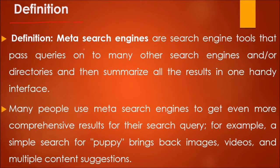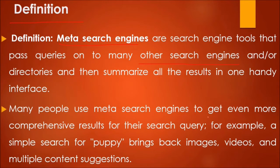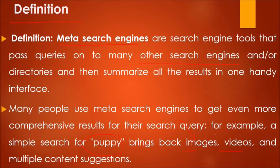Let us see the definition first. Meta search engines are search engine tools that pass queries onto many other search engines. A meta search engine queries many other search engines and directories, then summarizes all the results in one handy interface — not just one search engine, but many. Many people use meta search engines to get even more comprehensive results for their search query. For example, a simple search for 'puppy' returns images, videos, and multiple content suggestions.